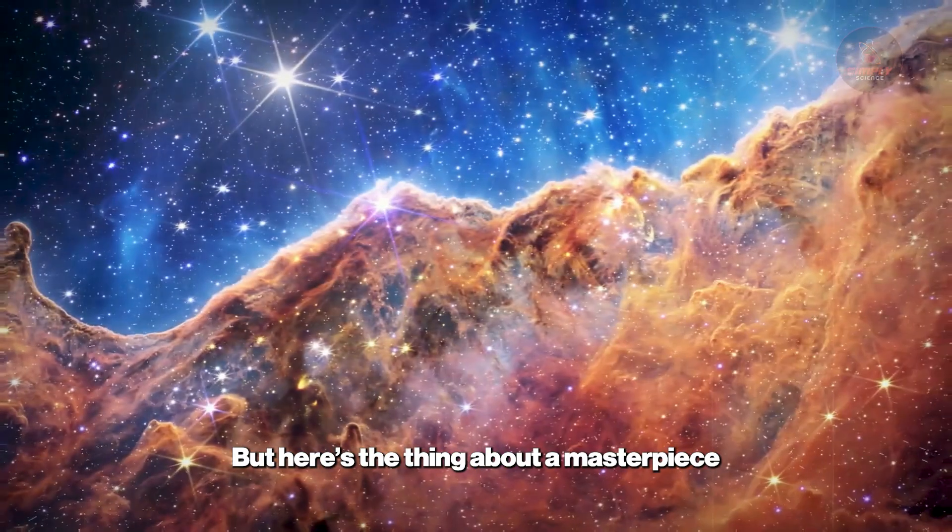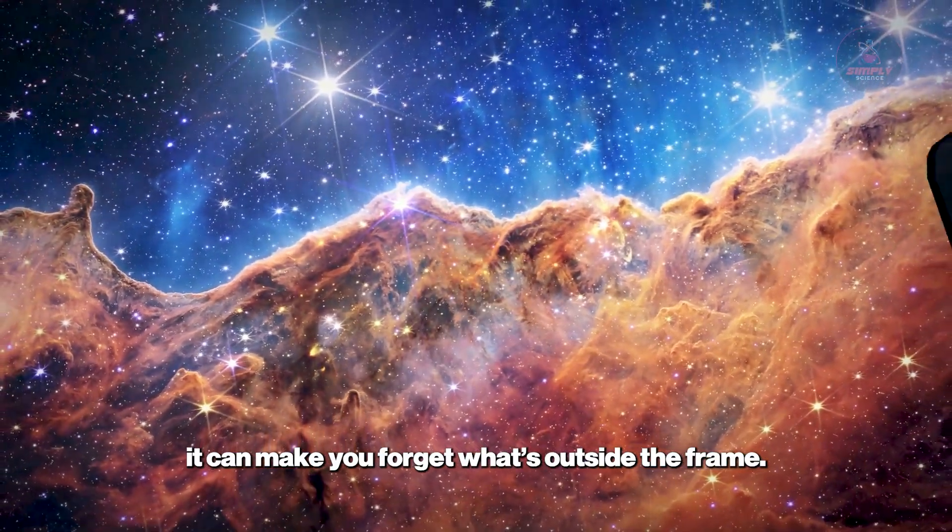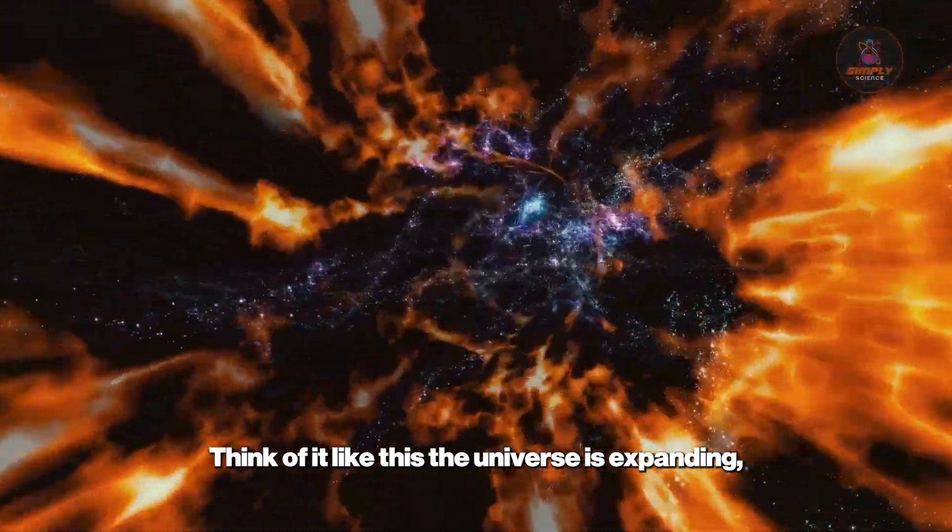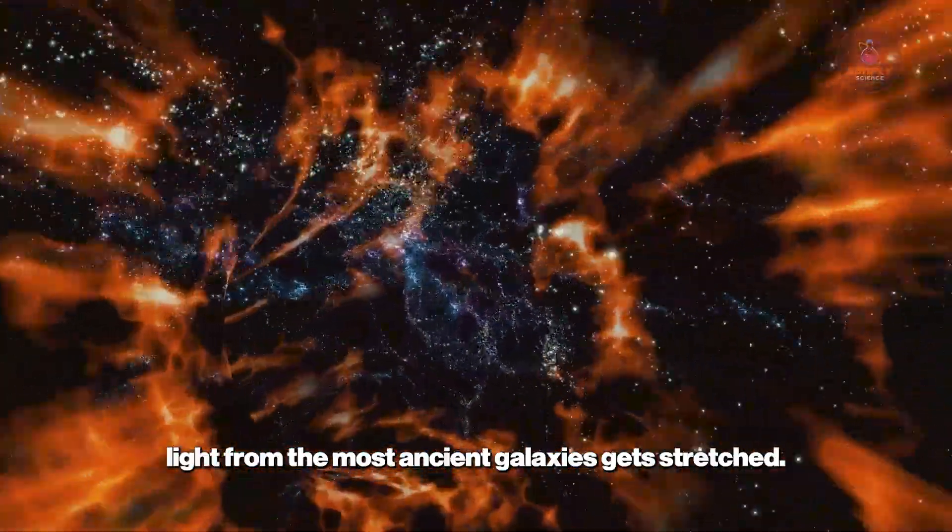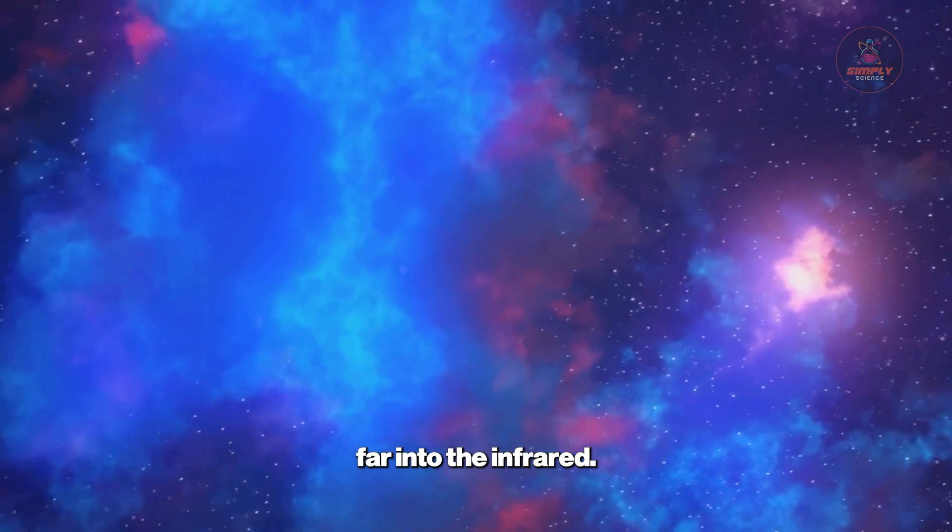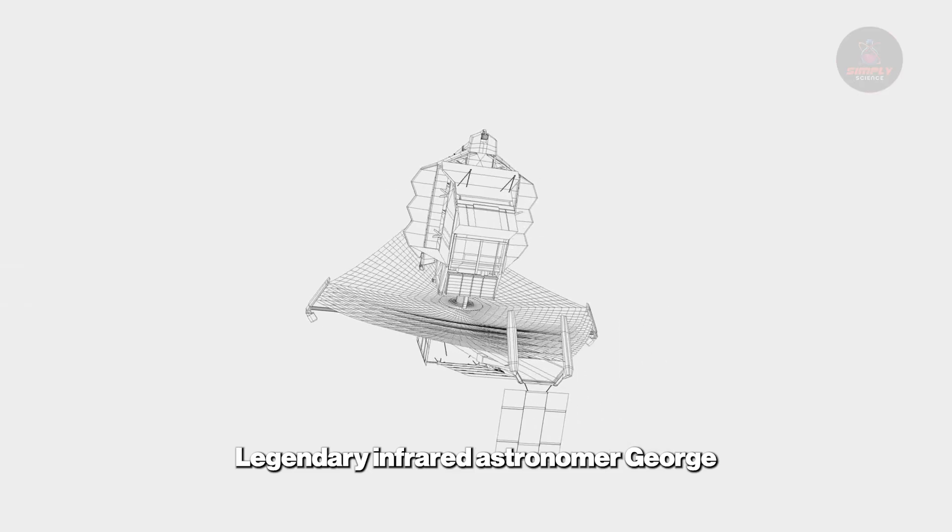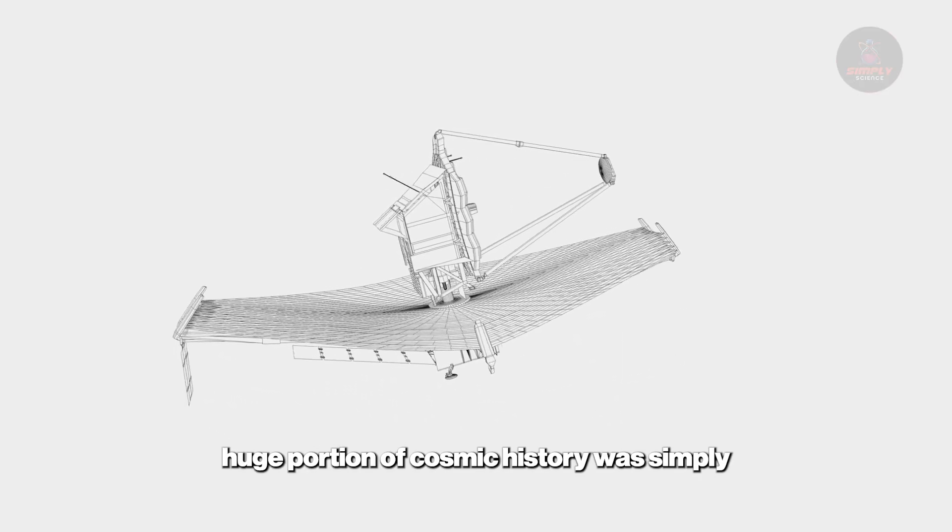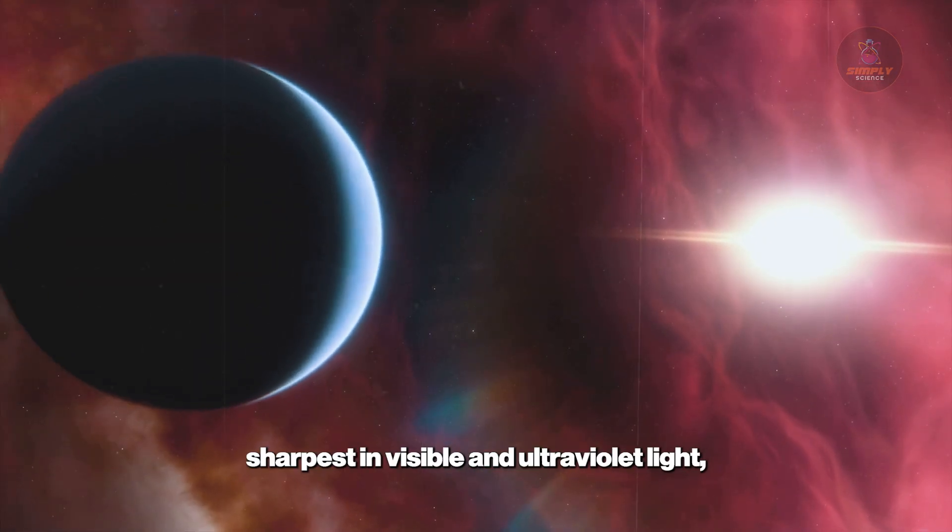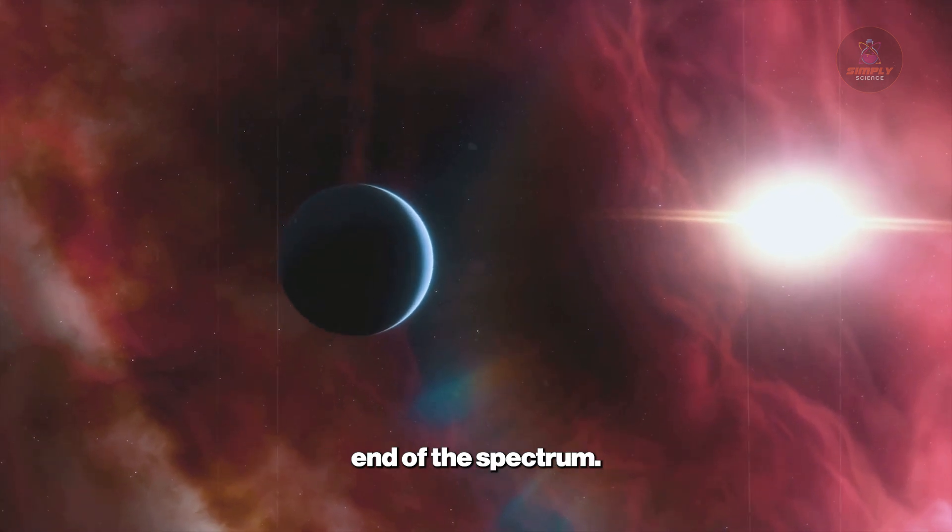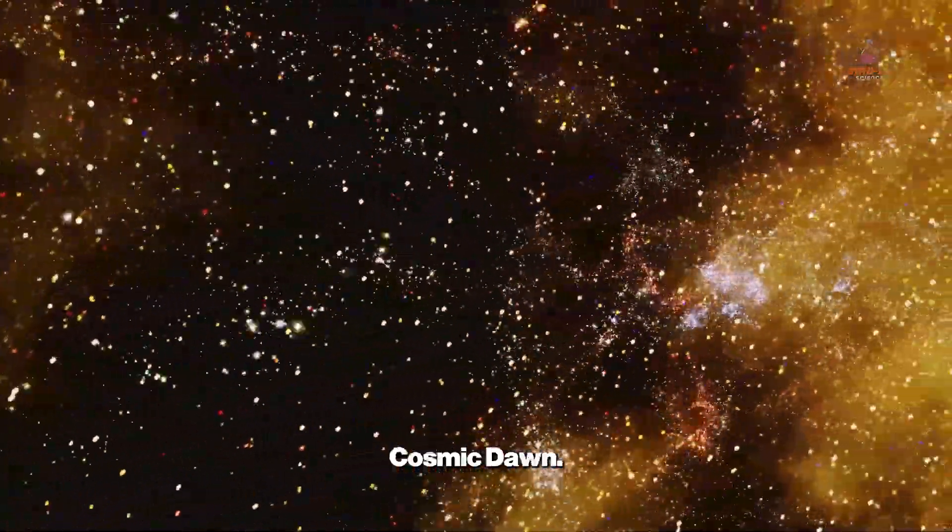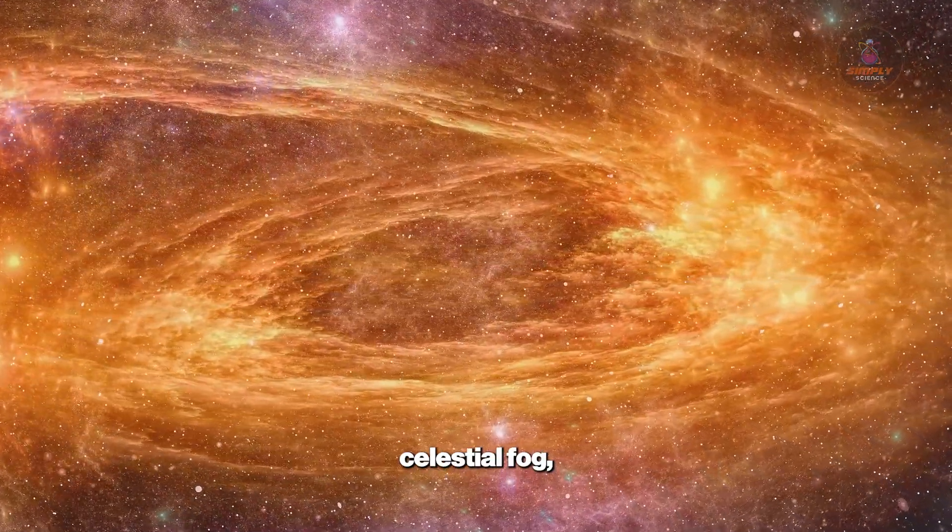But here's the thing about a masterpiece: it can make you forget what's outside the frame. The Hubble Ultra Deep Field, for all its glory, had profound limitations. Think of it like this: the universe is expanding, and as it expands, light from the most ancient galaxies gets stretched. This process, called redshift, shifts light from the visible spectrum far into the infrared. Legendary infrared astronomer George Rieke knew for decades that this meant a huge portion of cosmic history was simply invisible to telescopes like Hubble. Its vision, sharpest in visible and ultraviolet light, started to fade as it reached for the red end of the spectrum. It simply couldn't see the most redshifted ancient light from the era known as Cosmic Dawn.